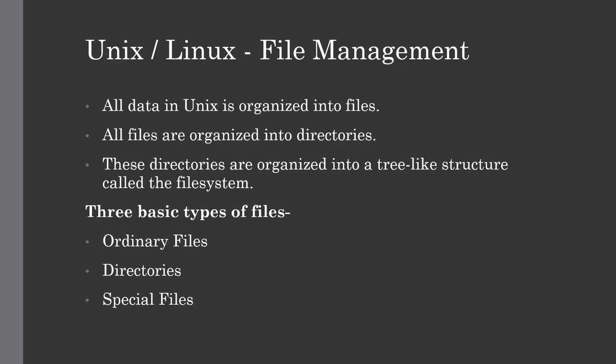There are three basic types of files. The first one is ordinary files, which are nothing but a file on the system that contains data, text, or program instructions. The second one is directories — directories store both special and ordinary files. For users familiar with Windows or Mac OS, UNIX directories are equivalent to folders. The last one is special files — some special files provide access to hardware such as hard drives, CD-ROM drives, modems, and ethernet adapters.